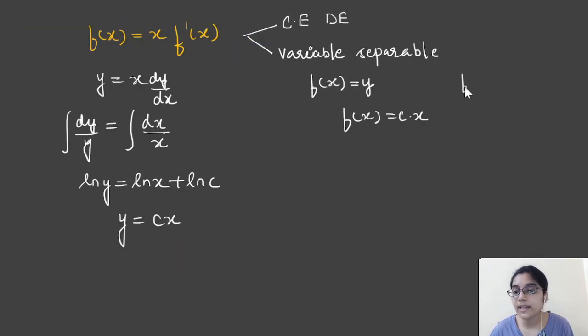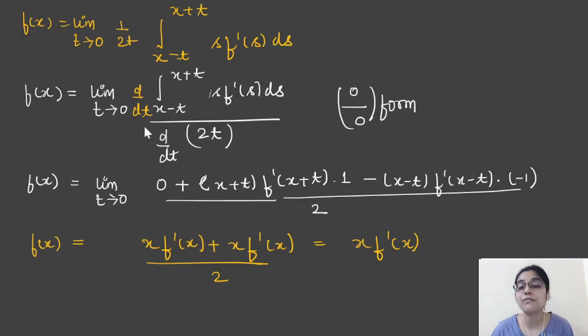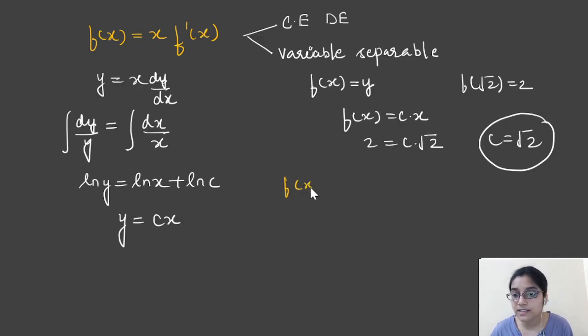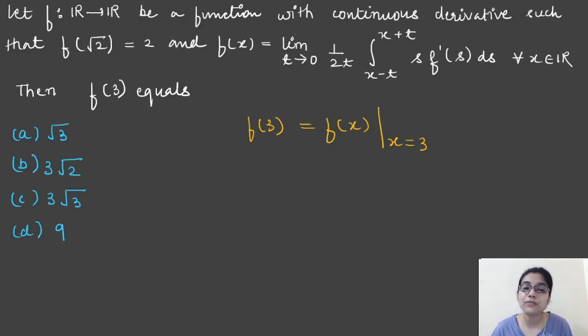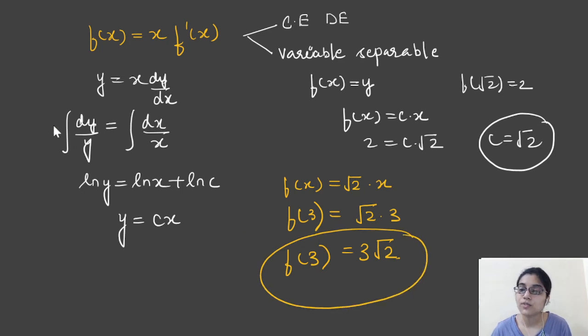To solve this question, we will take f of root 2 equals 2, so 2 equals c into root 2, which means c came out to be root 2. The question was very simple. You just have to keep this step in mind that you have to differentiate with respect to t while applying L'Hôpital's rule. So your f of x came out to be root 2 into x. The question asks for f of 3, so you just put x equals 3, which gives root 2 into 3, that is 3 root 2. That is the value of f of 3.